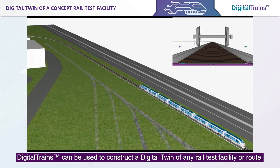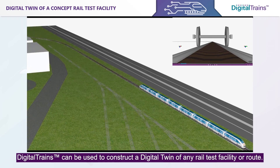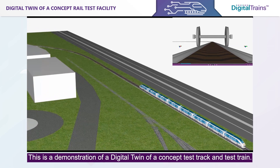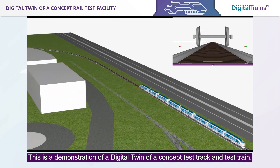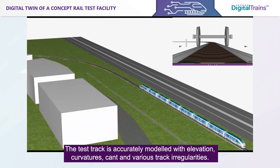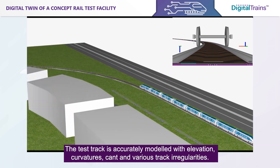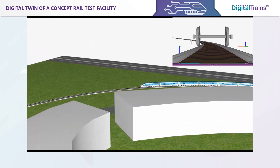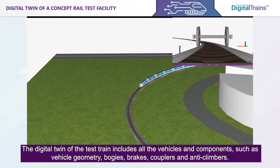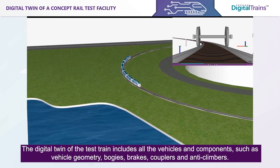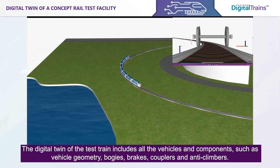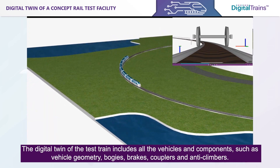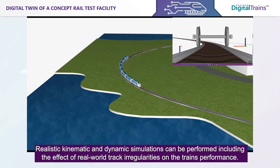Digital Trains can be used to construct a digital twin of any rail test facility or route. This is a demonstration of a digital twin of a concept test track and test train. The test track is accurately modeled with elevation, curvatures, cant, and various track irregularities. The digital twin of the test train includes all vehicles and components such as vehicle geometry, bogies, brakes, couplers, and anti-climbers.